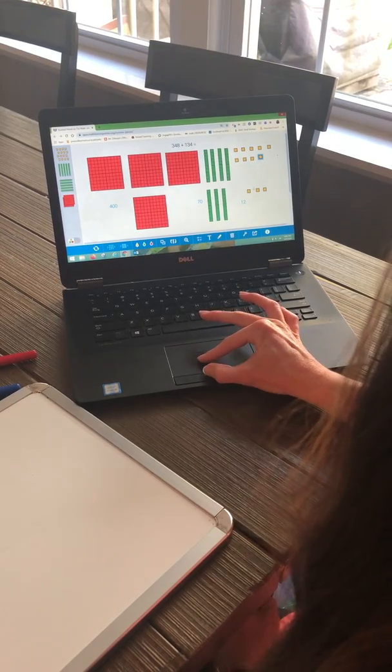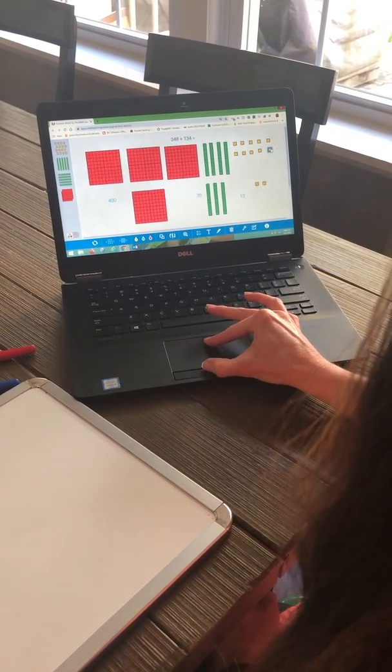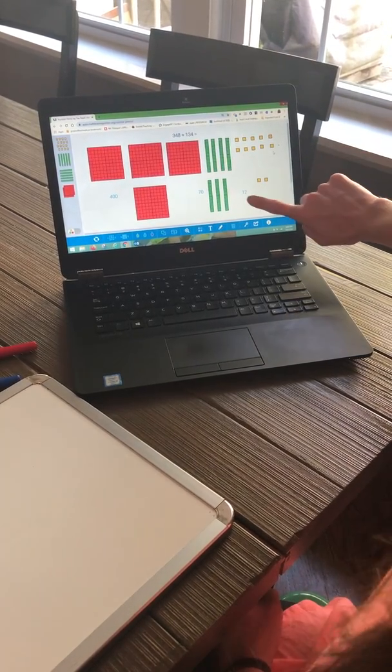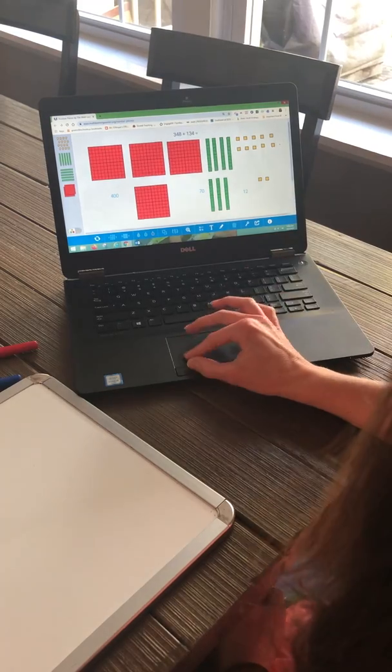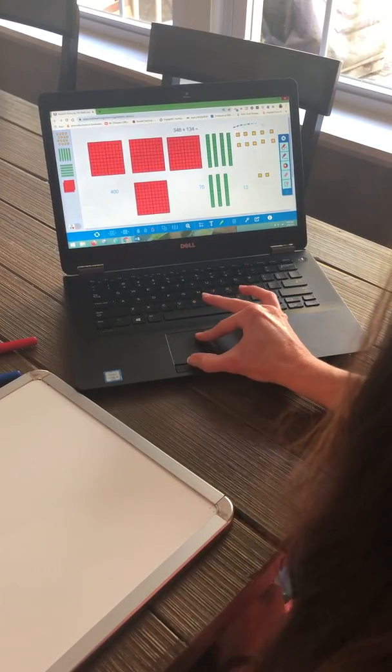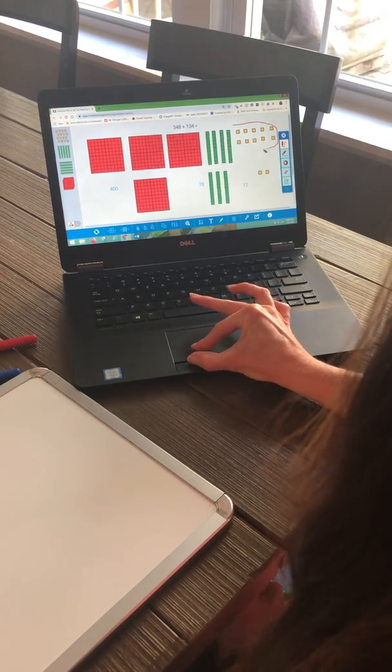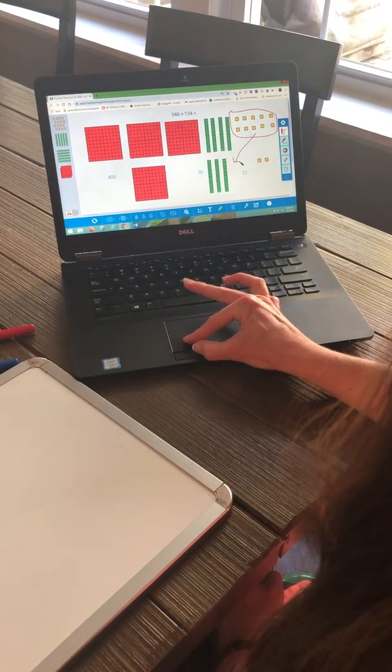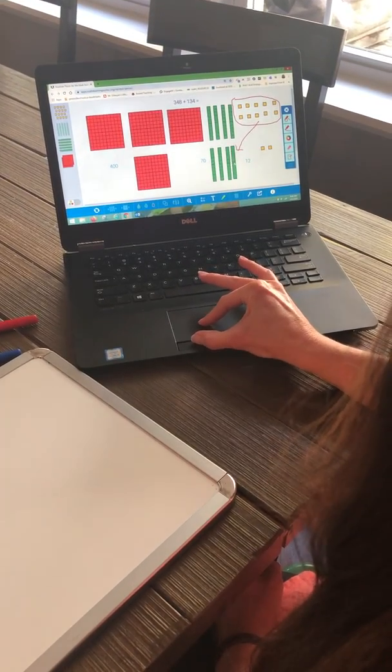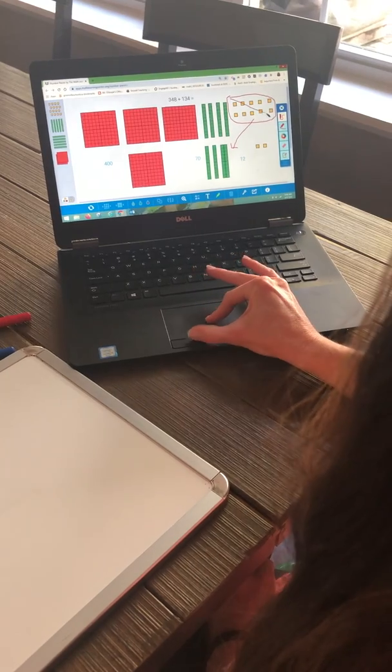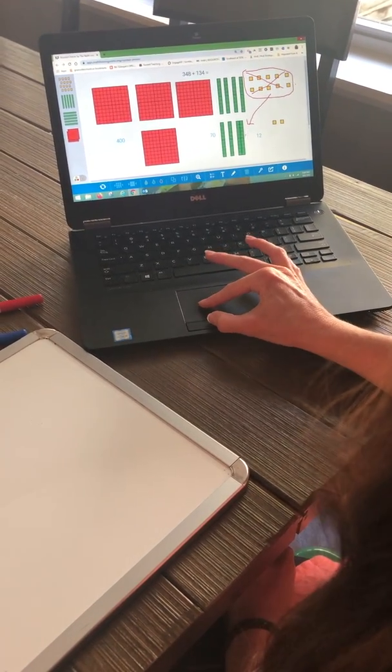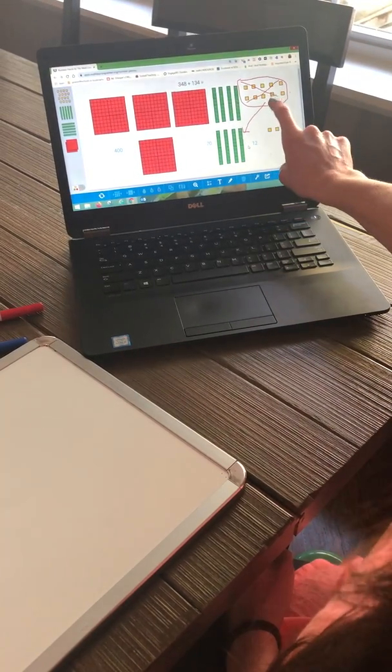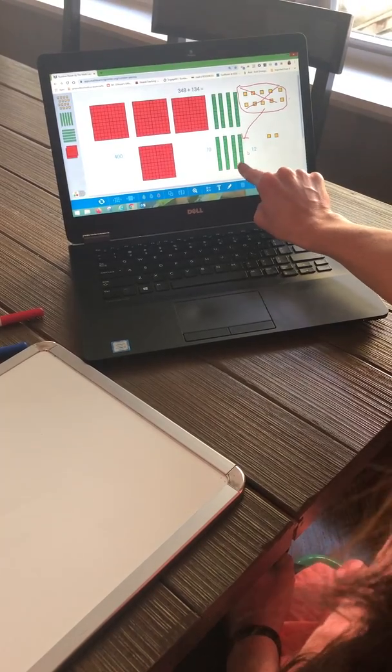So I'm going to move 2 1s up here to make a complete 10. This is still equal to 12. This is 10 plus 2. 10 plus 2 is still 12. I just moved them to make a bundle or group of 10. This is called regrouping. So I am going to take my bundle of 10 1s and I'm going to exchange it for a 10. So I am going to get rid of 10 1s and I'm going to exchange it for one 10. These are equal values. This is just like 10 $1 bills is equal to one $10 bill.